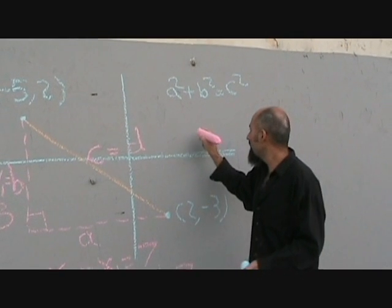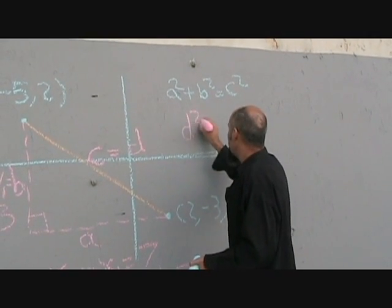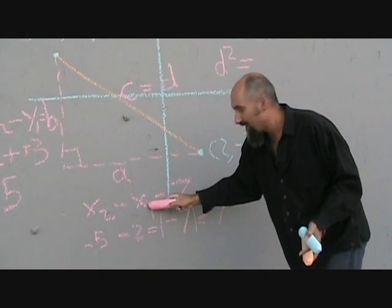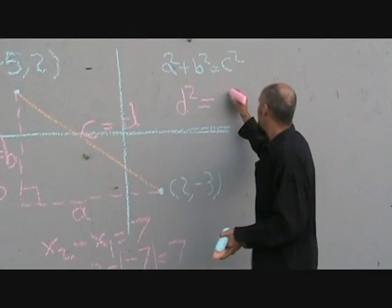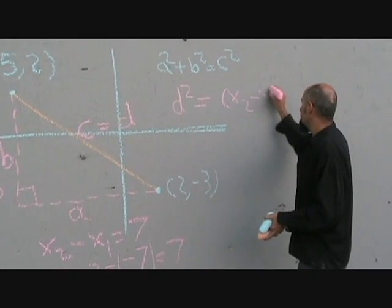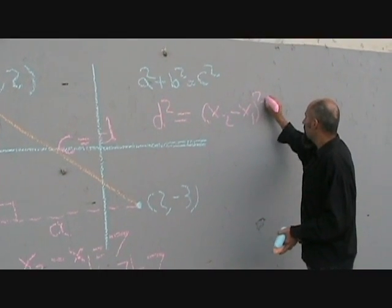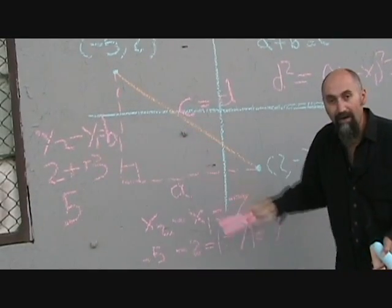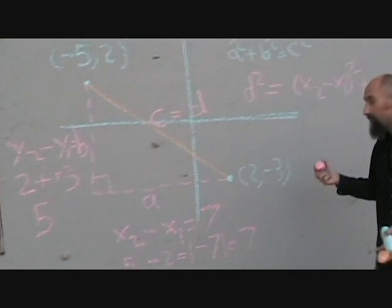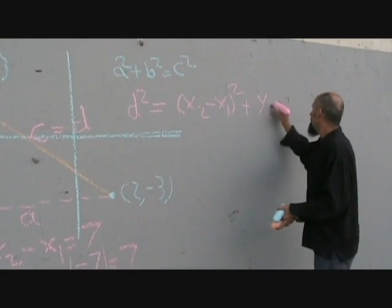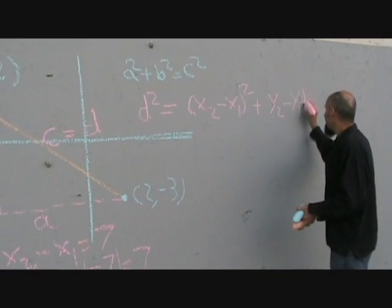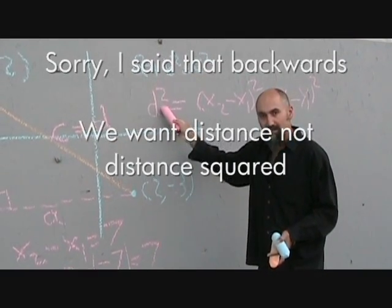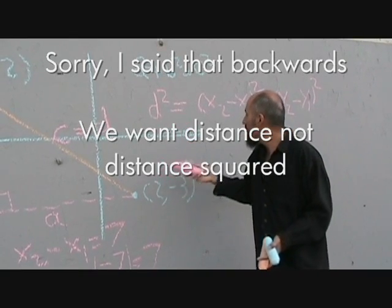So the way you can rewrite the Pythagorean theorem is D squared is equal to A squared, which is really x2 minus x1 squared. So this becomes x2 minus x1 squared plus y2 minus y1 squared, which is the vertical distance, y2 minus y1 in brackets, the whole thing squared. Now you don't really want distance squared, you want distance.